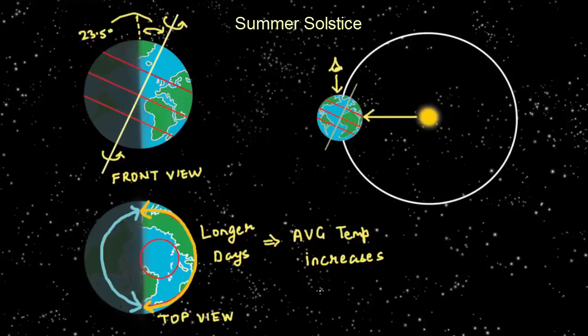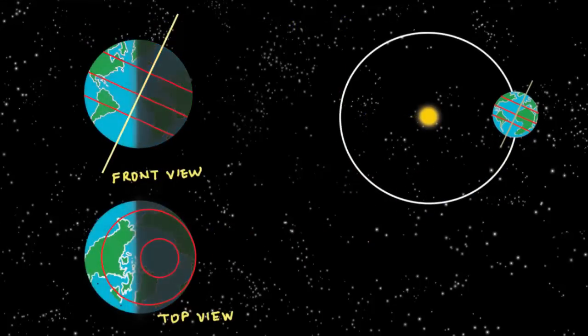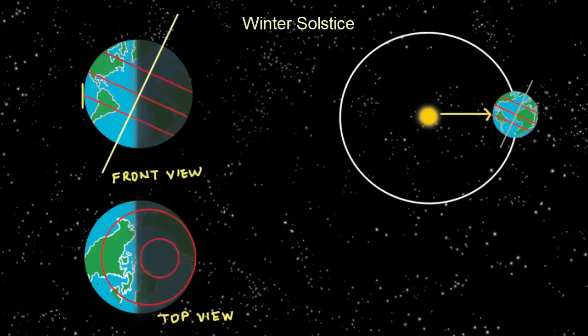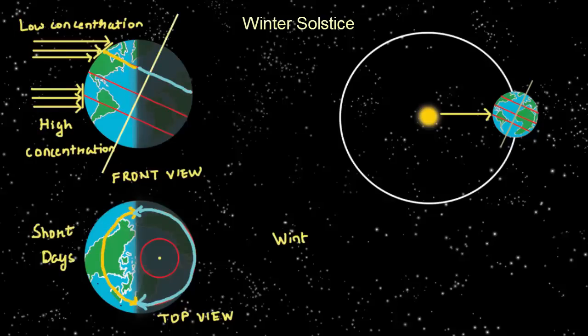Longer nights, lower average temperatures, and hence winter. Now, if we consider Earth's position at winter solstice, exactly the reverse happens. Rays are directly overhead the Tropic of Capricorn, so energy received is less in the Northern Hemisphere. In addition, the length of the day is shorter in the Northern Hemisphere, causing an overall decrease in average temperature and hence winter.